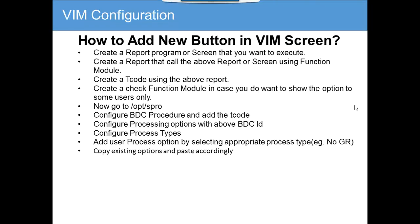Now we are going to cover how to add new buttons in VIM screen. These buttons can be anything related to entering a push receipt, entering coding information, or changing the PI vendor in PEW. Here you can add custom components, and the first important thing you have to do is create a report program or screen that you want to execute.